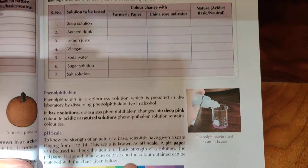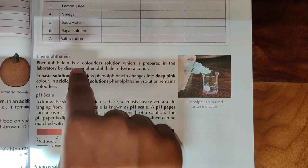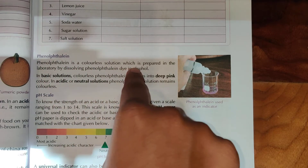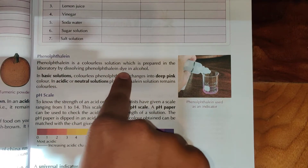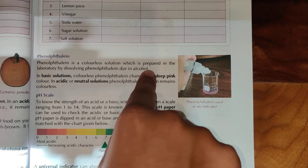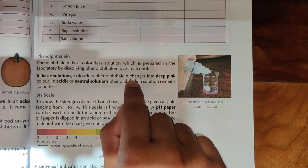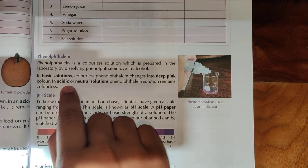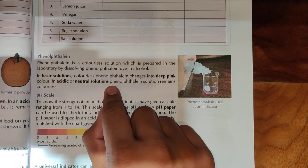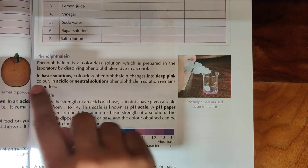Phenolphthalein is a colorless solution prepared in the laboratory by dissolving phenolphthalein dye in alcohol. In basic solutions, colorless phenolphthalein changes into a deep pink color. In acidic or neutral solutions, phenolphthalein solution remains colorless.